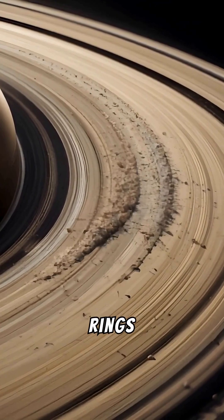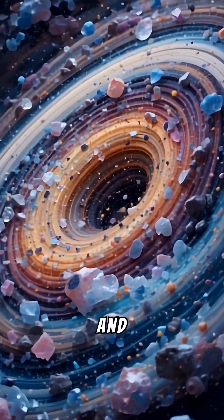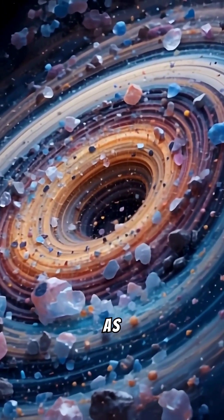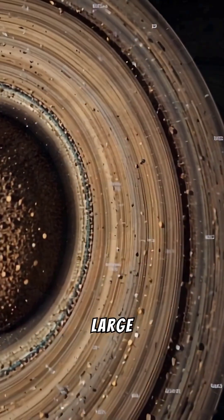Although they seem eternal, the rings are made up primarily of ice and rock particles orbiting the planet, some as small as grains of sand, others as large as mountains.